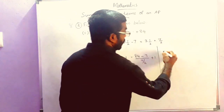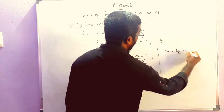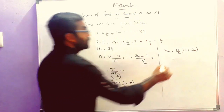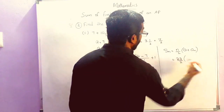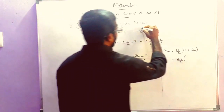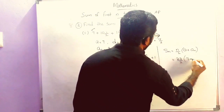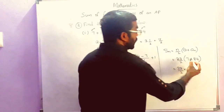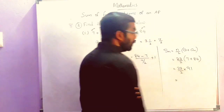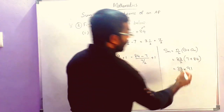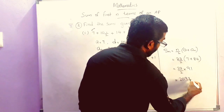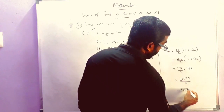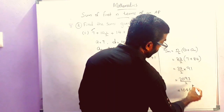Now we can find the sum using the formula S_N is equal to N by 2 into A plus AN. So it is equal to 23 divided by 2, into A plus AN. A is 7 and AN is the last term 84. So 7 plus 84 equals 23 by 2 into 91. That is 23 into 91, which is 2093 divided by 2. On dividing we get 1046 remainder 1.